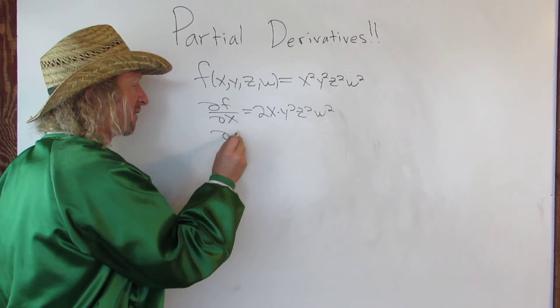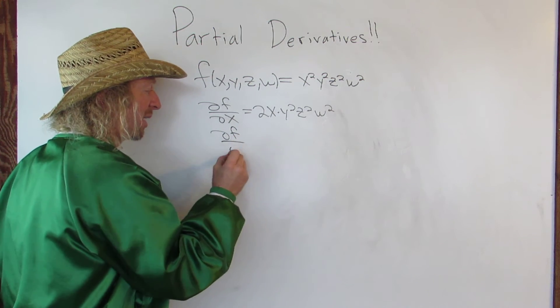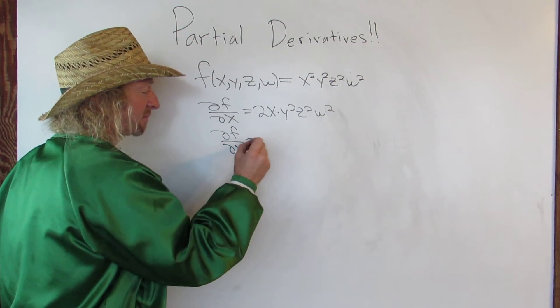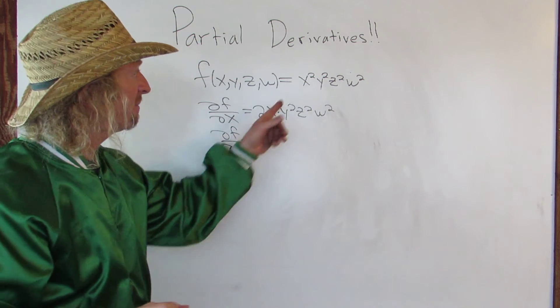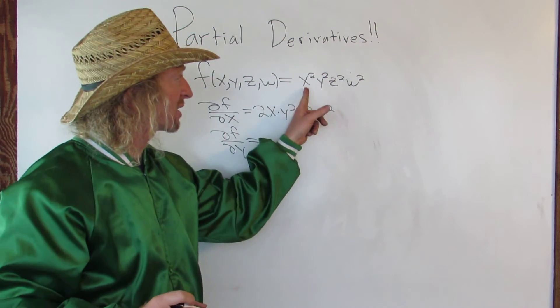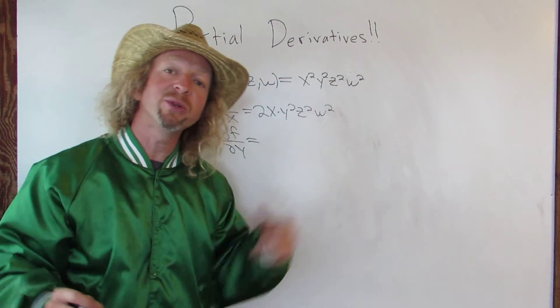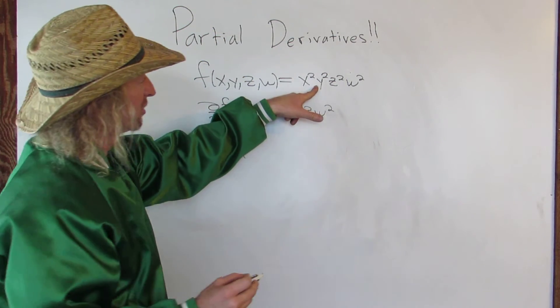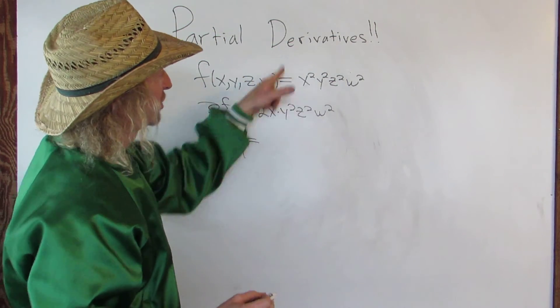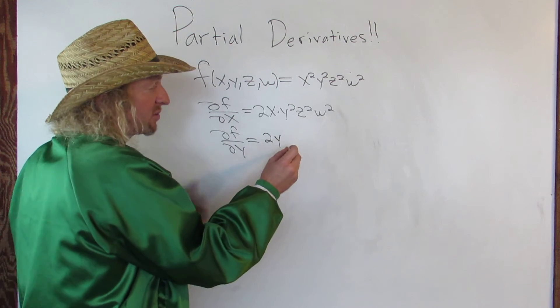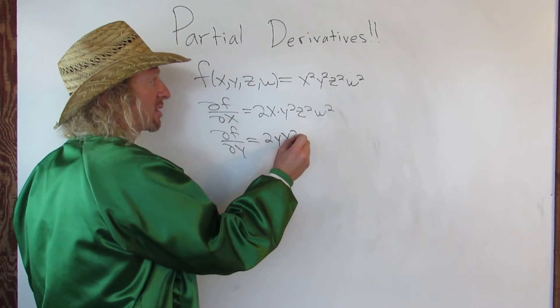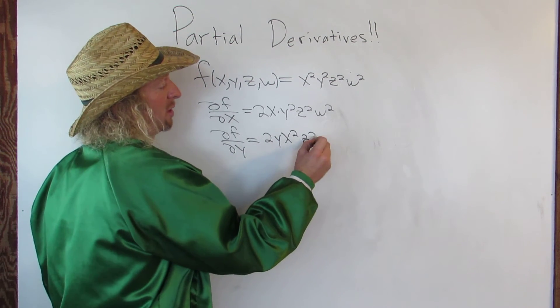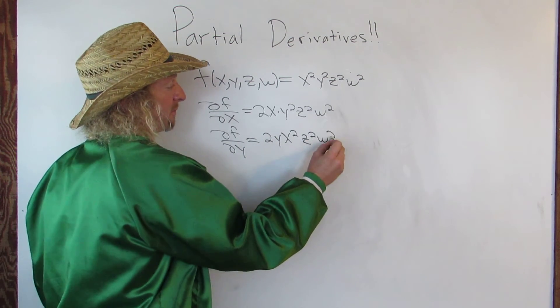Let's do del f del y. Same thing. In this case, x squared, z squared, and w squared are constant. So you take this derivative and just get 2y, and everything else hangs out: x squared, z squared, w squared.